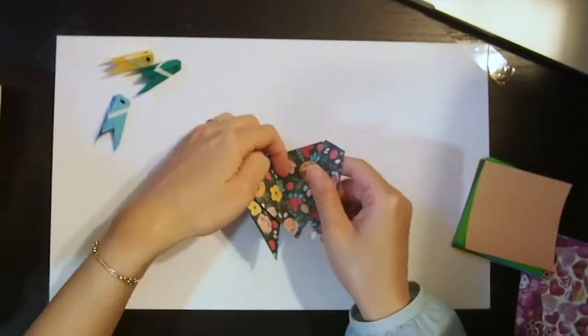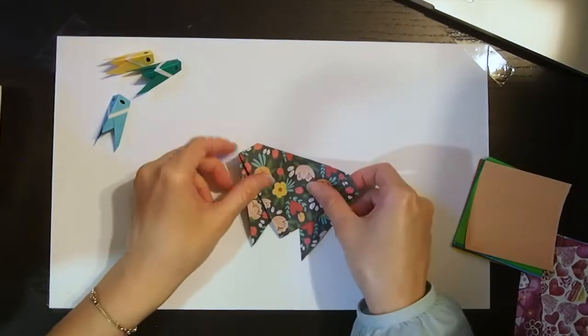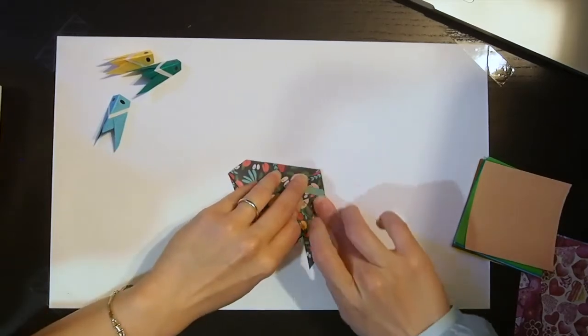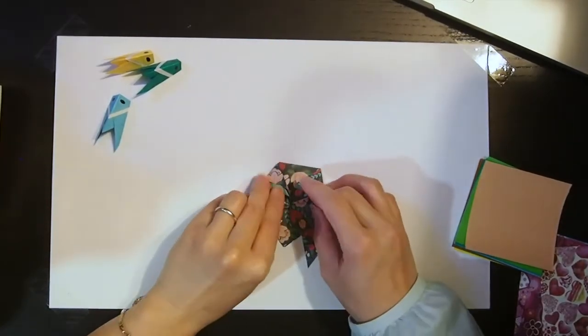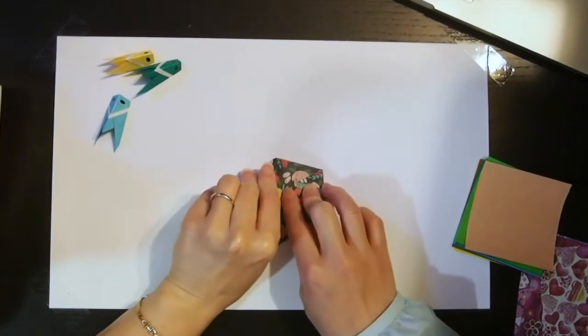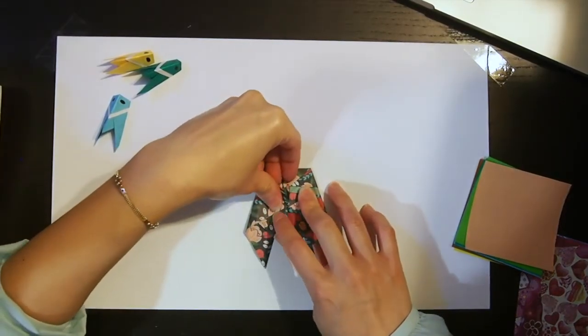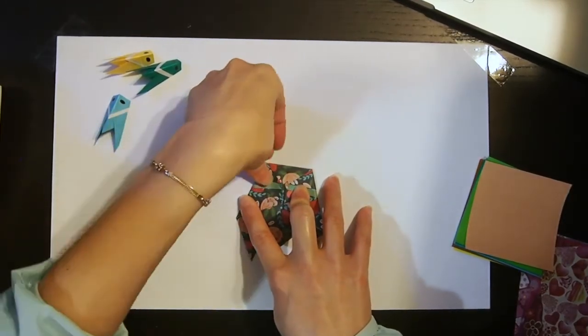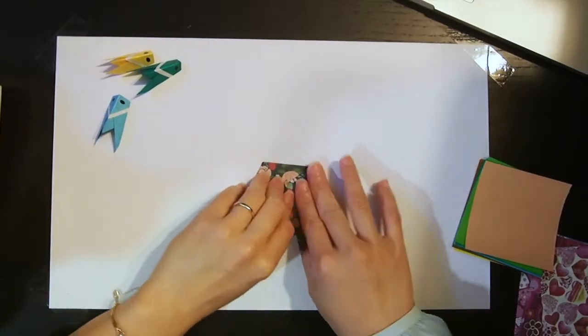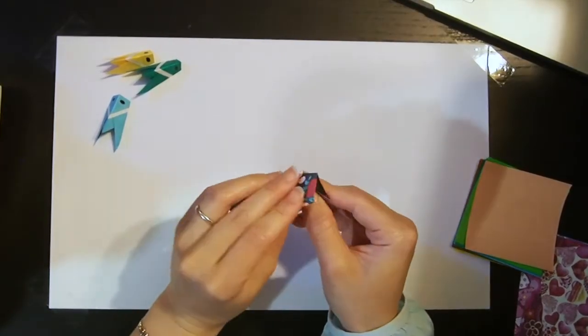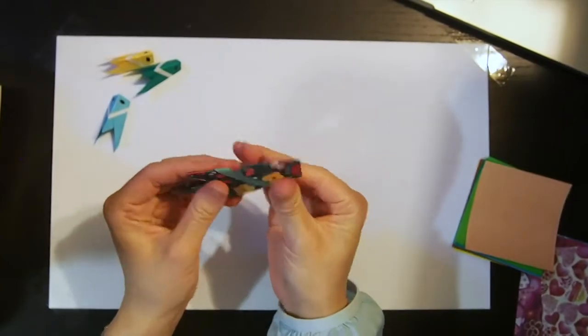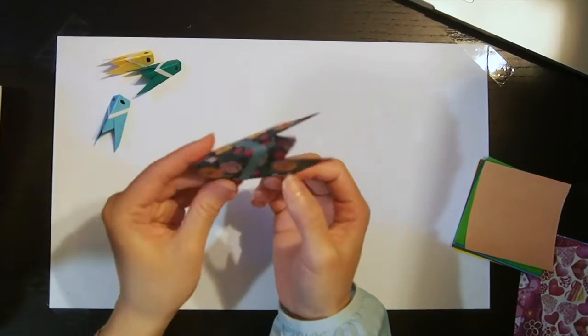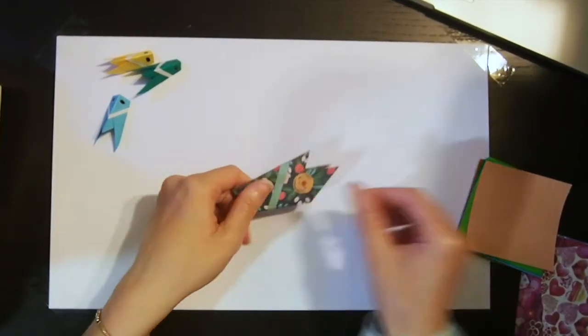We're going to fold each side. Then we're going to fold it. And there we have our cicada. So nice. Draw the eye.